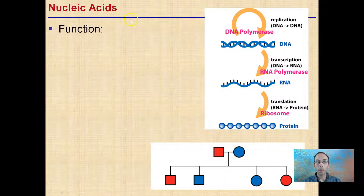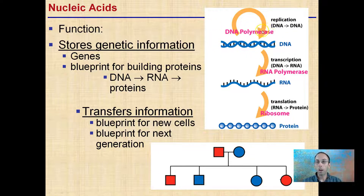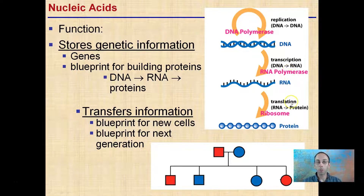Starting off, nucleic acids in general — the main function is to store genetic information. It's in the genes; it's a blueprint for the building of proteins. DNA will be transcribed into RNA, which is then translated into an amino acid sequence, which will ultimately make a protein. This is responsible for transfer of information — it's a blueprint for new cells and a blueprint for the next generation.